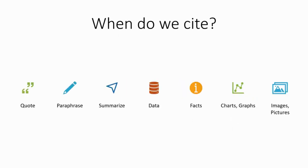When do we use citations? All the time. It is important to provide a citation whenever you use work that you have not created. That includes any time you quote, paraphrase, or summarize information from a source.